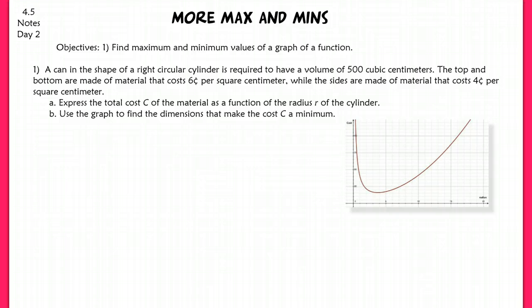Question number one says a can in the shape of a right circular cylinder is required to have a volume of 500 cubic centimeters. I'm going to draw this first and label what I know. The volume of this shape is given by the area of the base, which is πr², multiplied by its height. So πr²h is going to be my constraint because it equals 500.